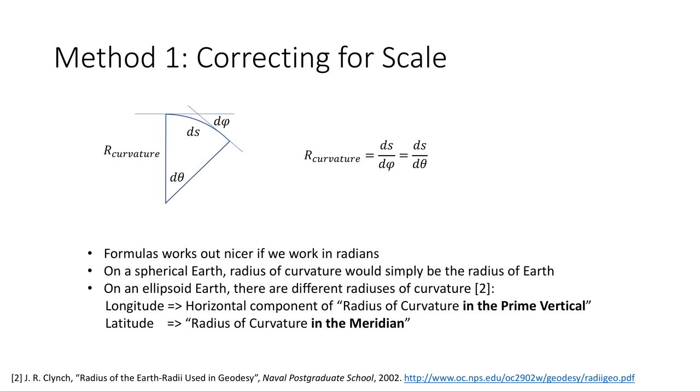So what can we do? Well, the simplest way would be simply to correct for the scale in each dimension. How do we calculate it? It turns out it's really easy to calculate that scale if we know the radius of curvature. Mathematically, radius of curvature turns out to just be the ratio ds there along the surface of a curve to dθ, the change in angle. These formulas work out much better when we're using radians. If you use degrees, things don't work out this nicely. On a spherical earth, calculating that radius of curvature is really simple, because it turns out that radius of curvature just is the radius of earth.